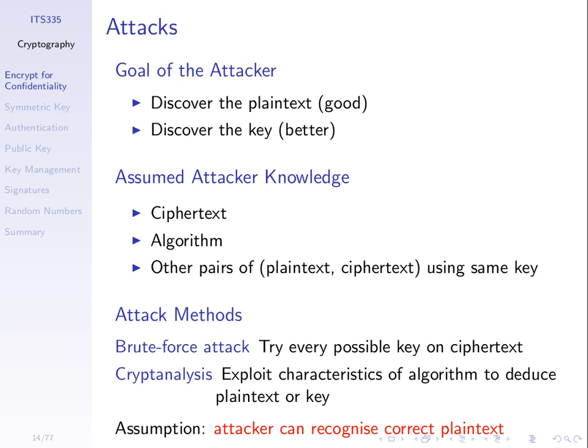What does the attacker do? Brute force — try all possible keys. How do you prevent that? Make sure the key space is large enough so trying them all takes too long or is too costly. Cryptanalysis exploits characteristics of the algorithm to work out the plaintext or key — like frequency analysis of classical ciphers. It's not brute force; it uses structure and knowledge of the algorithm to work backwards from the ciphertext.